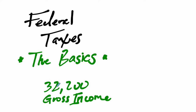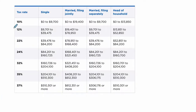We're going to start with $32,200. If you pull up federal taxes and go online, I came across this table from Investopedia. It looks a little bit complicated — there's a lot of things happening here. We've got tax rates and then all these different categories.